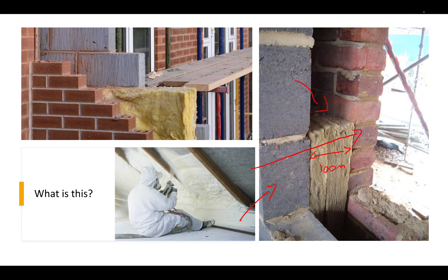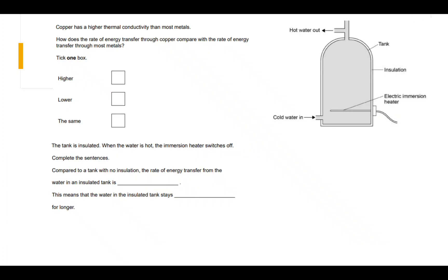Let's finish with a question — pause and have a go. Copper has a higher thermal conductivity than most metals. How does the rate of energy transfer through copper compare with the rate of energy transfer through most metals? Well, if it's got a higher thermal conductivity, then it's going to transfer a higher amount of thermal energy — so the rate of energy transfer is higher.